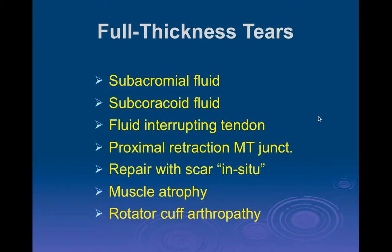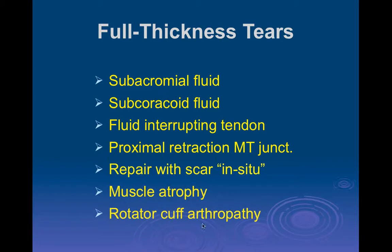Now let's move on to full-thickness tears. There are a number of findings we look for: fluid going into the subacromial bursa, subcoracoid fluid, fluid interrupting the tendon itself where the tendon pulls back and fluid fills the torn empty space, proximal retraction of the muscular-tendon disjunction, scar in situ, and in longer more chronic stages especially with massive tears, muscle atrophy and fibrosis within the muscle which may make it very difficult or impossible to repair without putting in some sort of graft tissue. In longstanding disease we look for rotator cuff arthropathy.